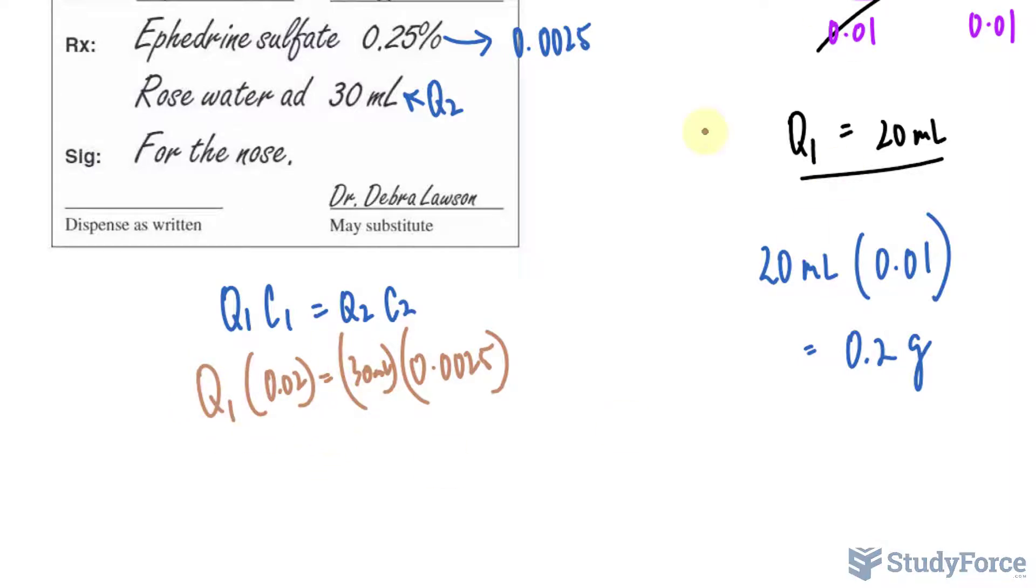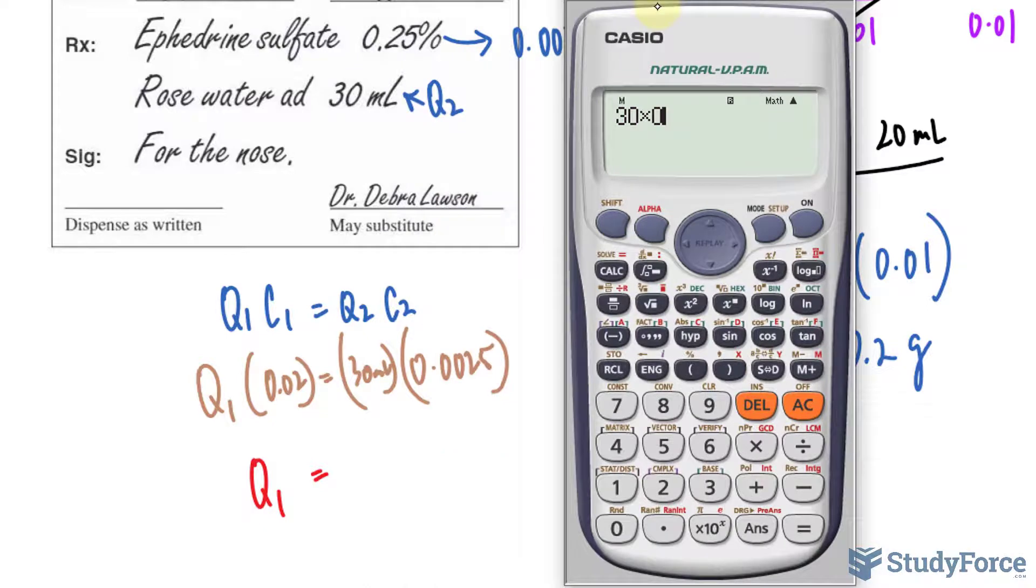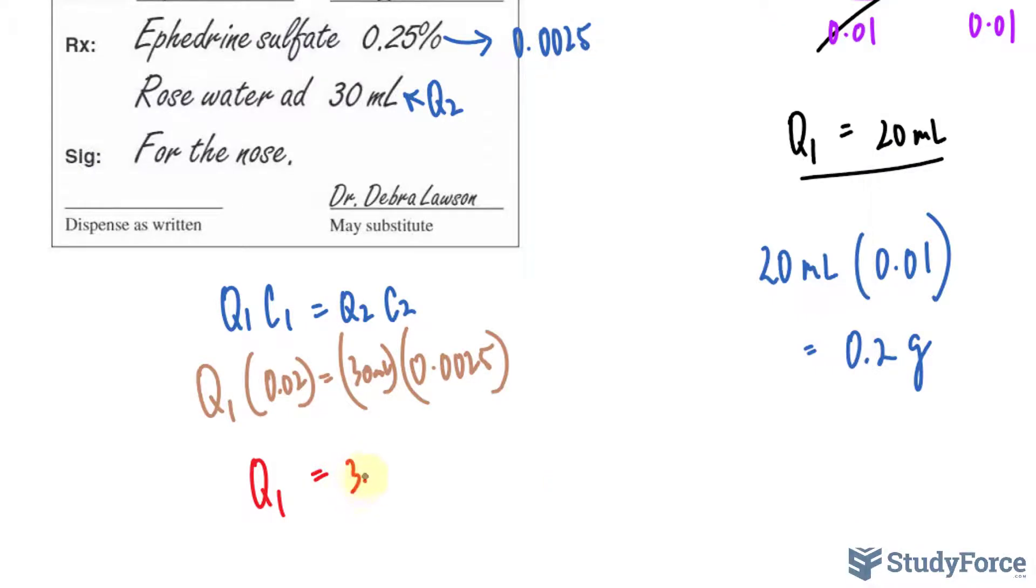Doing it the same way as we did in question 3, we multiply those out, so 30 times 0.0025, and then divide both sides by 0.02. You end up with 3.75. So the stock solution needs to be 3.75 milliliters at a concentration of 2% for you to be able to prepare this final solution.